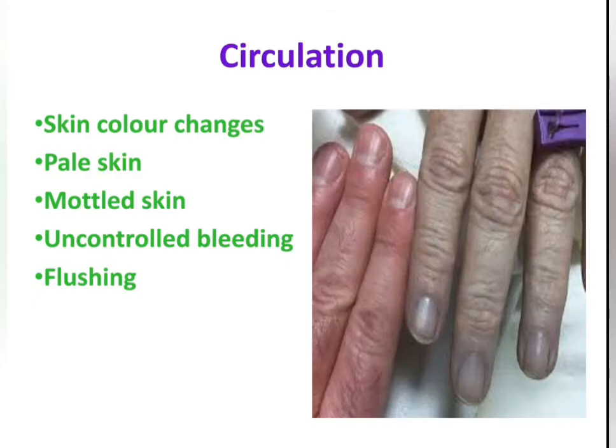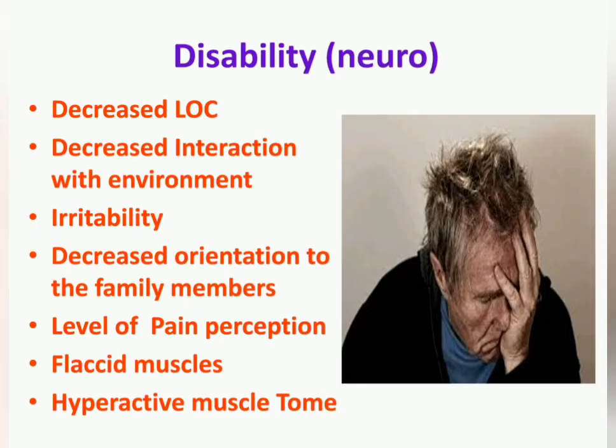In circulation we assess for skin color changes such as pale skin, mottled skin, uncontrolled bleeding, and flushing. The neurological assessment evaluates decreased level of consciousness, decreased interaction with the environment, irritability, decreased orientation to family members, level of pain perception, flaccid muscles, and hyperactive muscle tone.